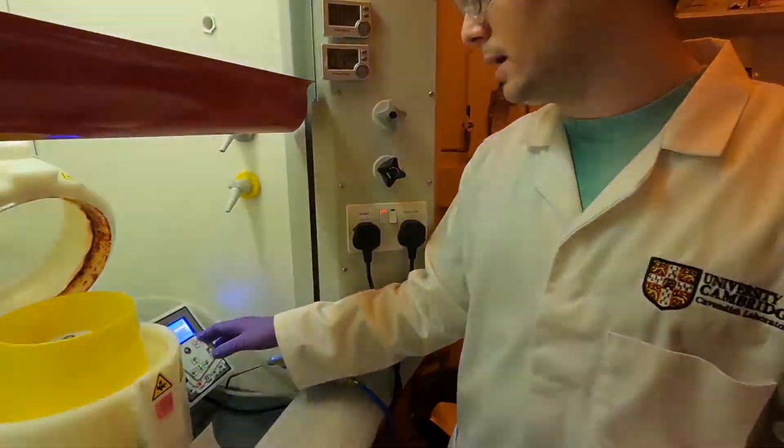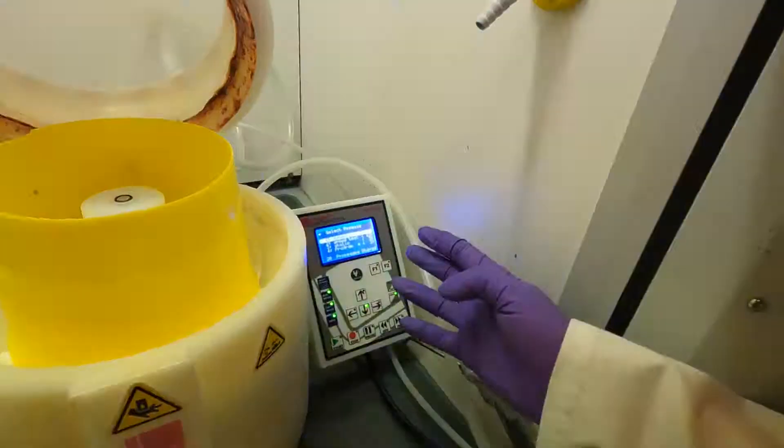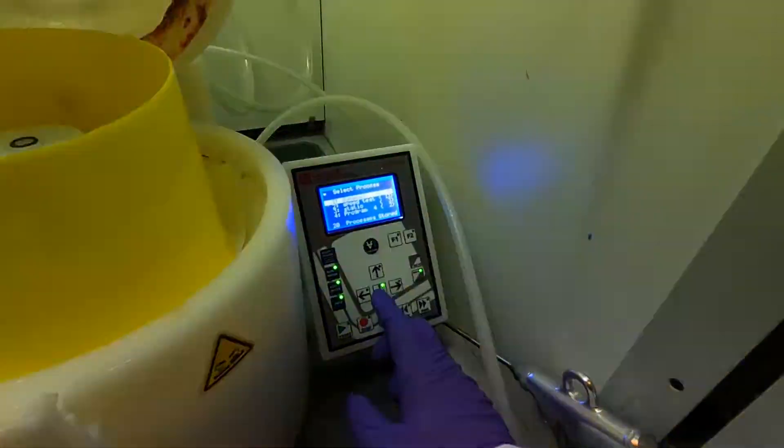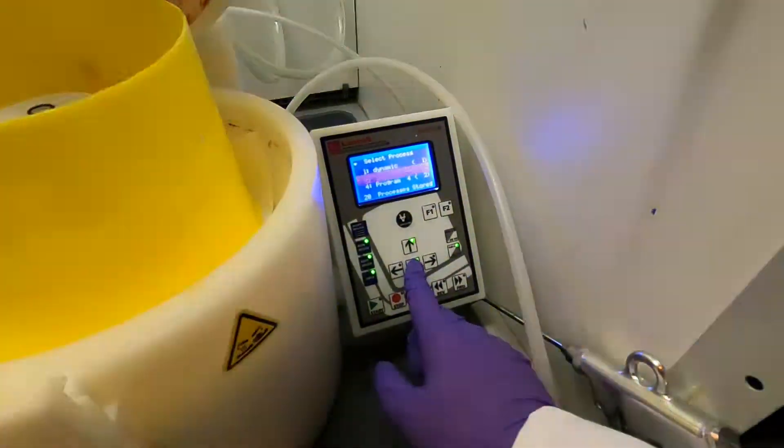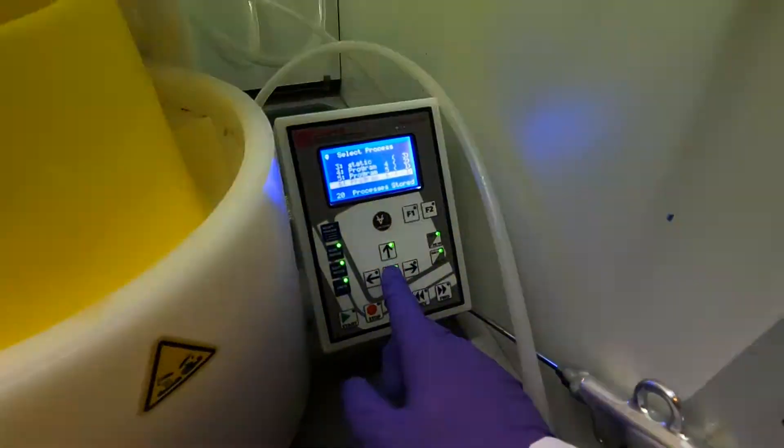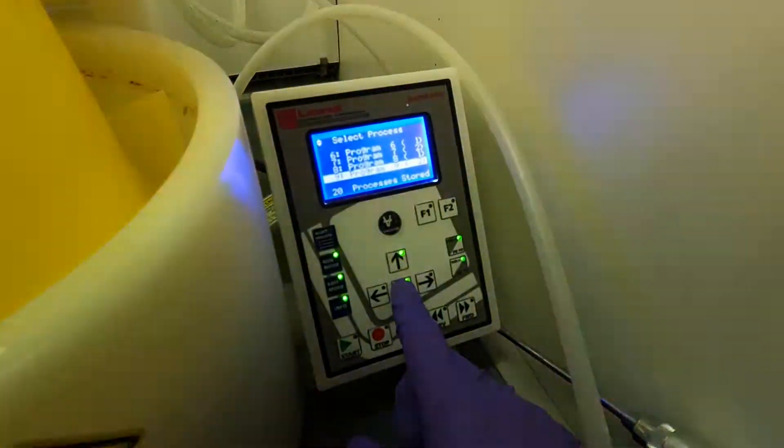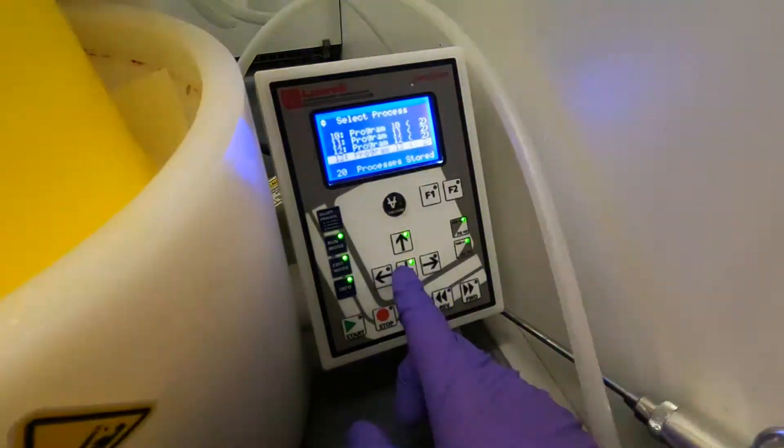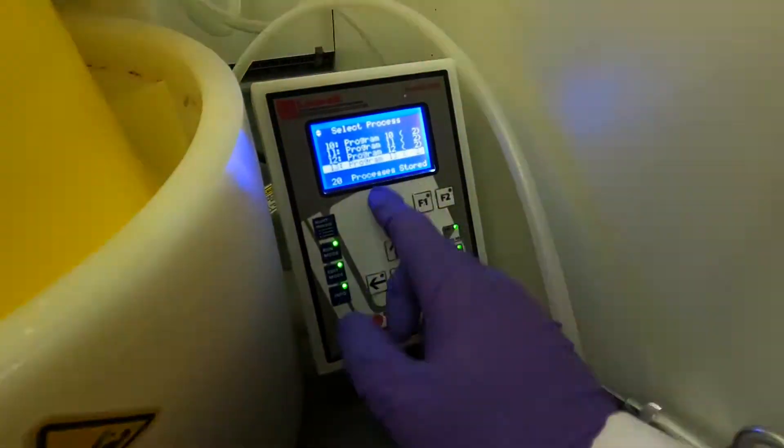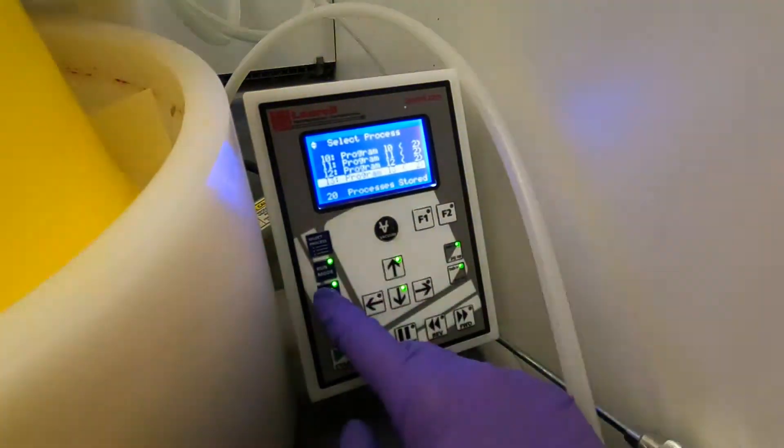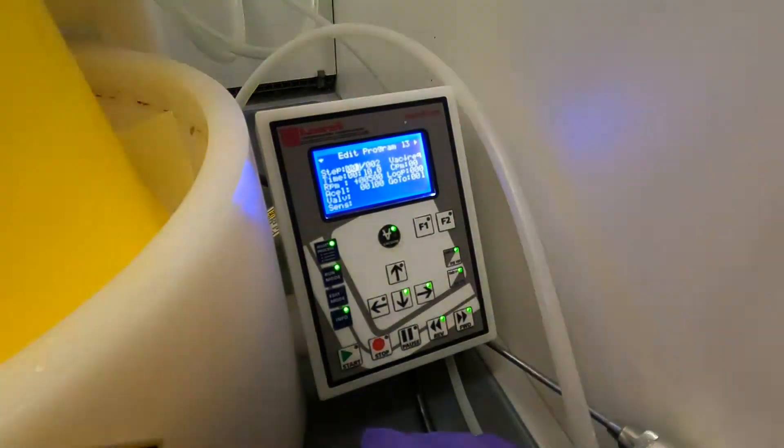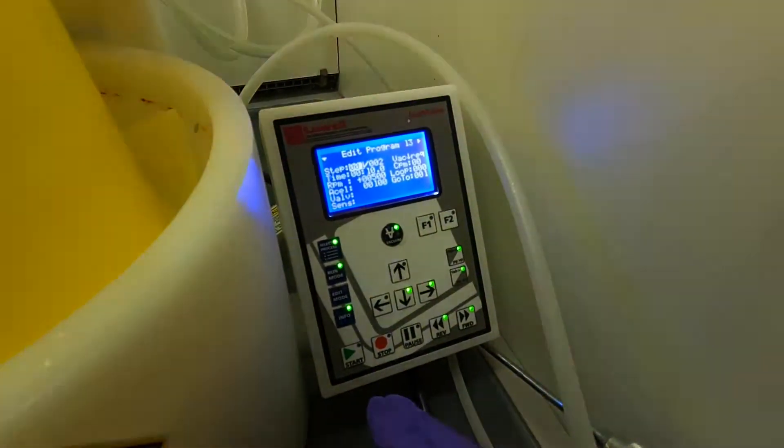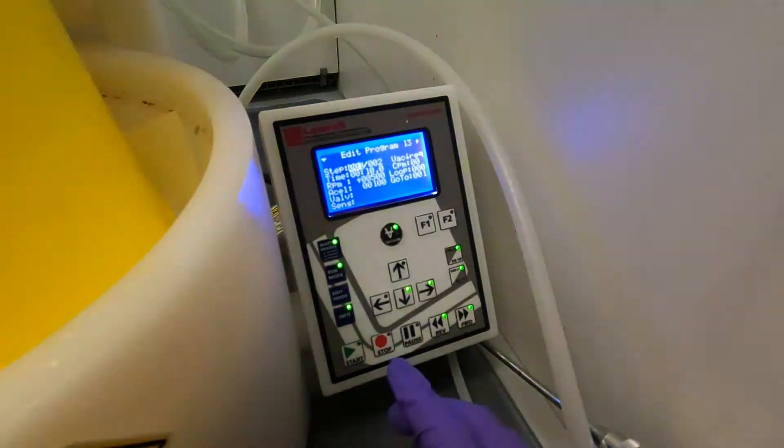I've turned on the spinner and you can have a look at the display. This is the display when it's first turned on. What I want to do now is to scroll through the programs, and the program that I will use today for this demonstration is program number 13. Once you select program number 13, I can hit the edit mode button and this will allow me to change any values or to just check the values to see that I have what I want.